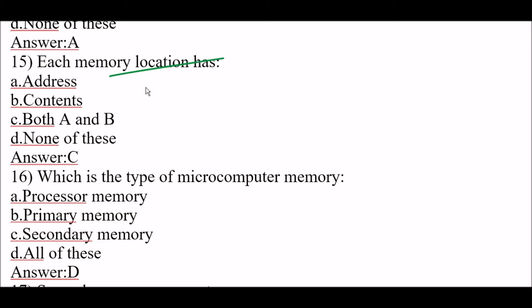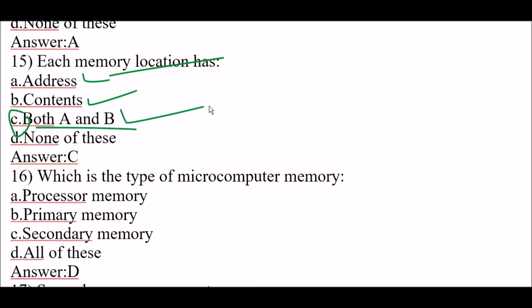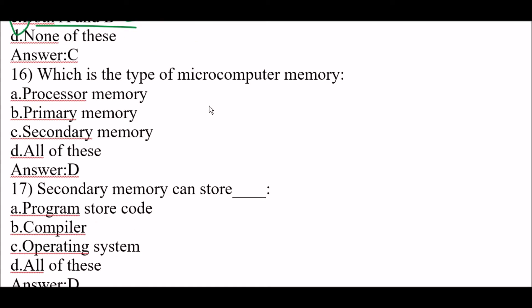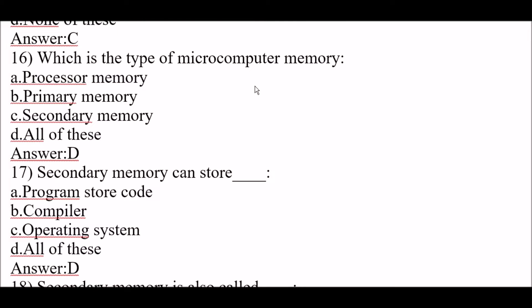Next question: each memory location has option C, address and contents — the right answer is option C, both A and B. Next question: which are the types of micro-computer memory? Processor memory, primary memory, and secondary memory are all types. The right answer is option D, all of these.